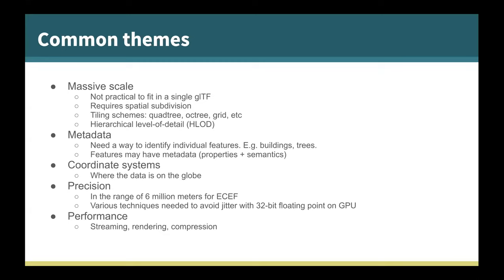In addition to the massive scale problem, we also need to represent metadata — to identify individual features within a dataset, whether buildings, trees, or other components. These features may have properties like building heights or longitude/latitude, plus semantics that say what these properties mean. Additionally, coordinate systems are needed to place the data on the globe, handled through an extension or a transform in 3D tiles or GLTF. Precision is also very important — dealing with Earth-scale models in the range of 6 million meters requires techniques to avoid jitter with 32-bit floating point on the GPU. And performance: we need to maintain a constant frame rate as the camera moves and loads new tiles, plus geometry and texture compression.